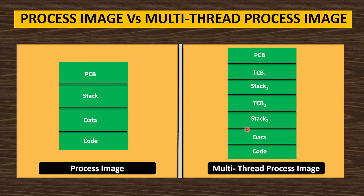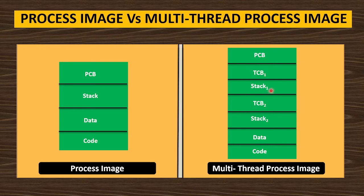In the multi-threaded process image, the process is divided into multiple threads. It still has a PCB (Process Control Block) with process information like process ID and CPU info. Additionally, every thread has a TCB (Thread Control Block) just like a process has a PCB. Each thread also has its own private stack not shared with other threads. So TCB1 and Stack1 belong to thread 1, TCB2 and Stack2 belong to thread 2 — these are private and cannot be shared with other threads. The data and code sections are shared by all threads.